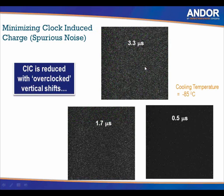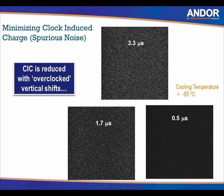Regarding clock-induced charge, you want to reduce it so that it's not amplified in the gain register. Three different shift speeds are shown: 0.5, 1.7, and 3.3 microseconds — the speeds at which photoelectrons are transferred in the sensor. The lowest clock-induced charge is achieved by using the fastest transfer speed of 0.5 microseconds. Having your camera cooled and using the fastest vertical shift speed gives you minimal noise, ensuring you're only amplifying your signal in the gain register.